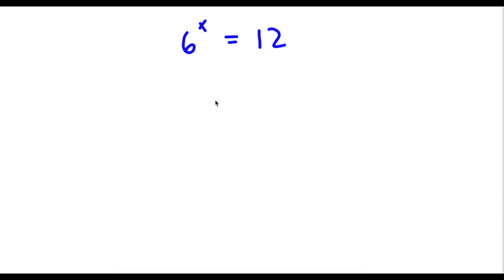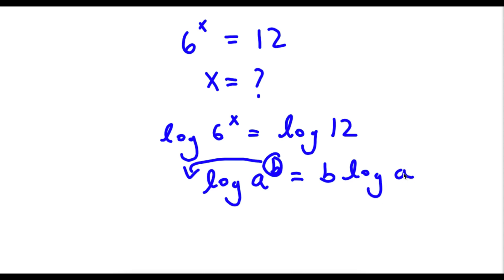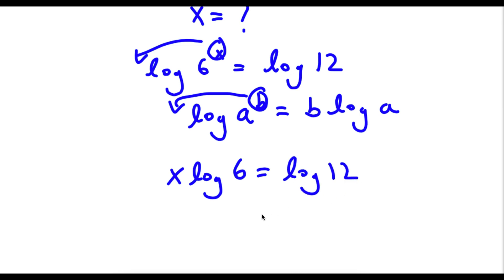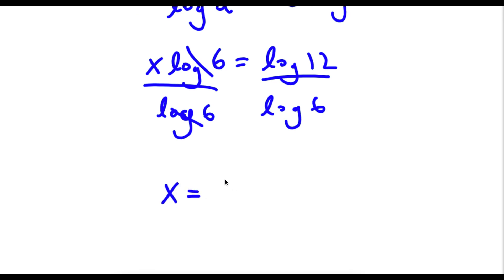If 6 to the power of x is equal to 12, I want to find the value of x. The first thing I'm going to do is take the log on both sides, giving log of 6 to the power of x equals log 12. Using the property that log a to the power of b equals b times log a, I move the exponent to the front: x times log 6 equals log 12. Dividing by log 6 on both sides, these cancel out, and I'm left with x equals log 12 over log 6.